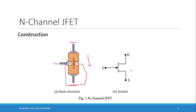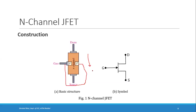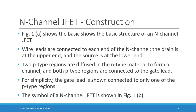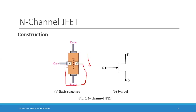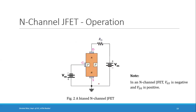The symbol of an N-channel JFET has the direction of the arrow mark pointing from the gate into the device. The basic structure shows wirelets connected to each end of the N-channel — one is the drain and the other is the source. Two P-type regions are diffused into the N-type to form a channel, and both P-type regions are connected to the gate, though for simplicity only one connection to the gate is shown.